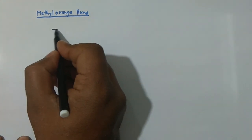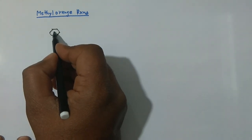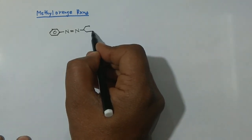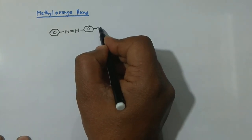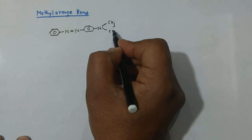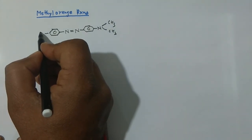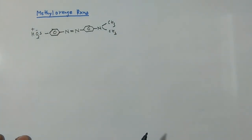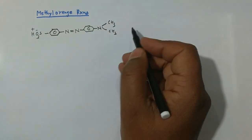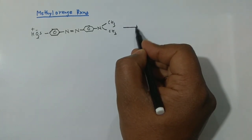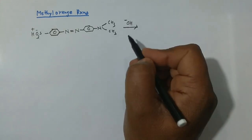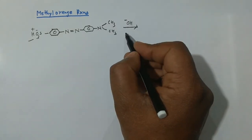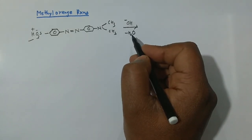The structure of methyl orange contains a benzene ring with an SO₃⁻ group, an azo linkage (N=N), and a dimethylamino group (with two methyl groups attached to nitrogen). This structure is yellow in alkaline medium. When acid is added during titration, specific changes occur to this structure that result in the red endpoint color.